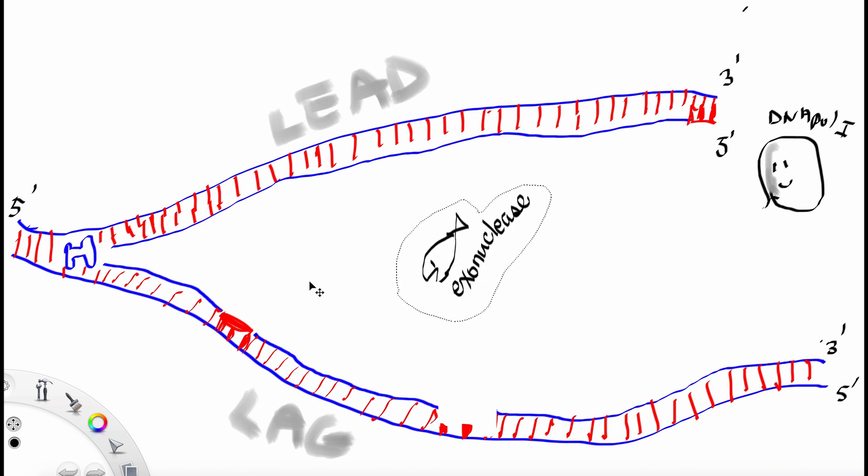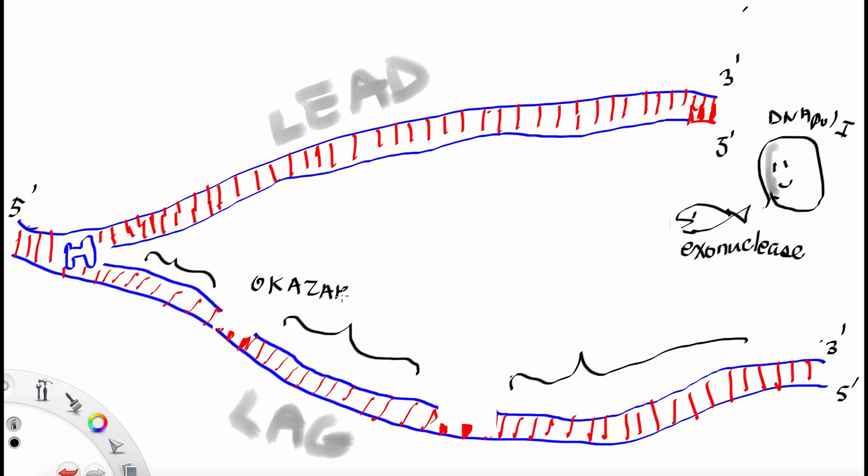Exonuclease comes along and it eats the RNA primer. And it leaves behind fragments of DNA that we call Okazaki fragments.